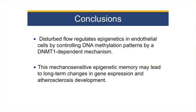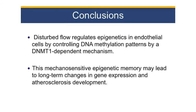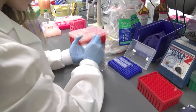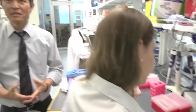In conclusion, we showed that disturbed flow regulates epigenetics in endothelial cells by controlling DNA methylation in a DNMT1-dependent mechanism. This mechanosensitive epigenetic memory may lead to long-term changes in gene expression and atherosclerosis development. Our results could also mean that aerobic exercise changes blood flow patterns and imparts long-term changes in gene expression by controlling epigenetic patterns. The role of epigenetics and the genes identified in this study could provide new therapeutic targets to treat atherosclerosis.